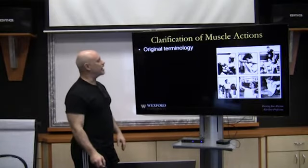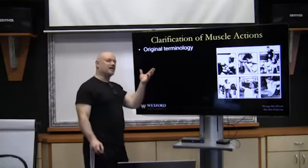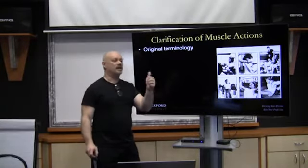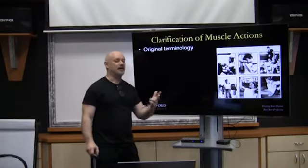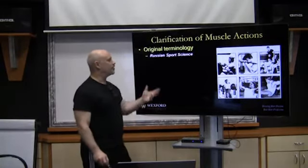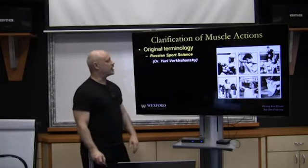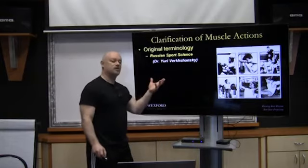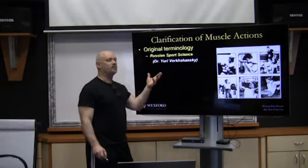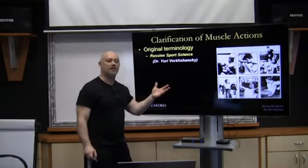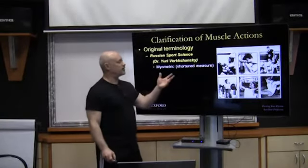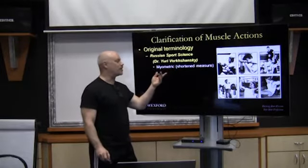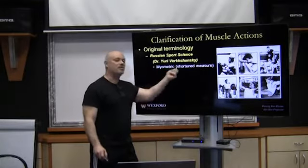Now let's look at the classification of muscle actions and the original terminology. In the fitness and strength training industry we're used to concentric, eccentric, and isometric. But the original terms come from Russian sports science, from a gentleman named Dr. Yuri Verkashansky, who was one of the world's premier specialists on speed, strength, and explosive types of movements. The original term for shortening — what we call contraction — is called myometric, meaning muscle shortening or shortened measure.